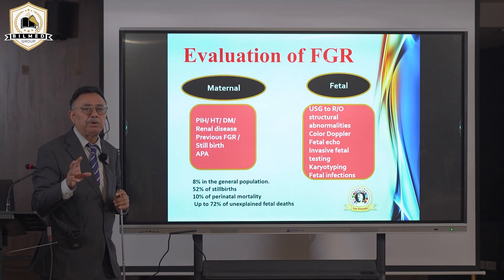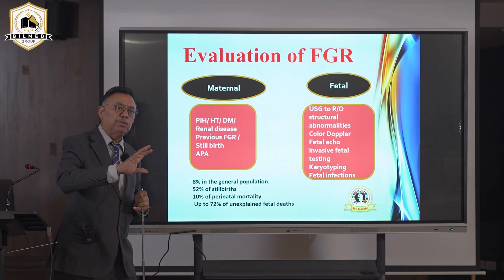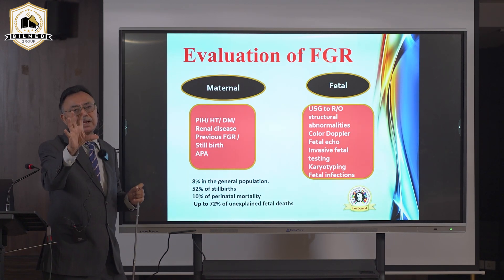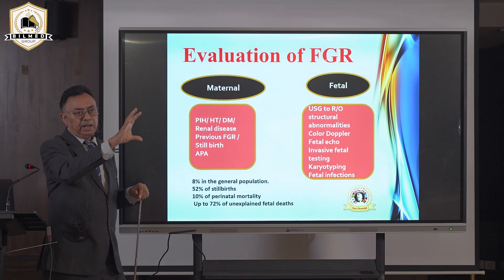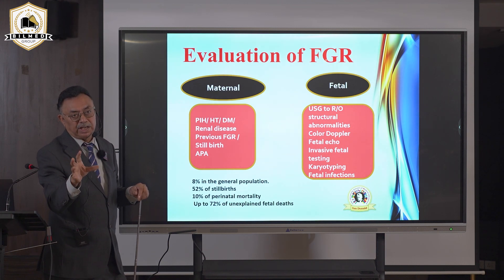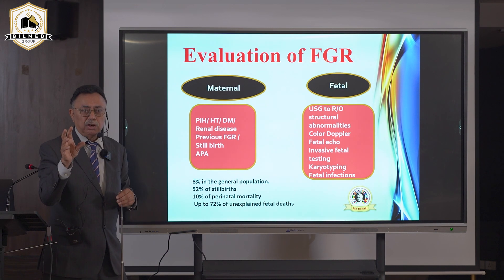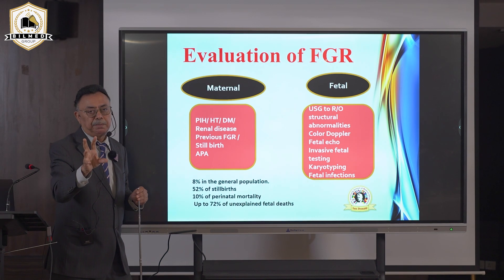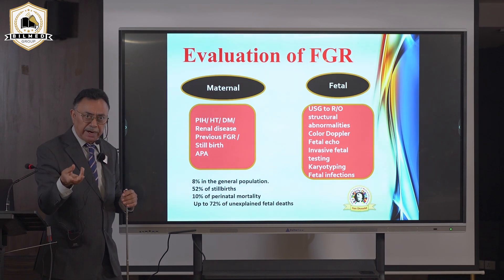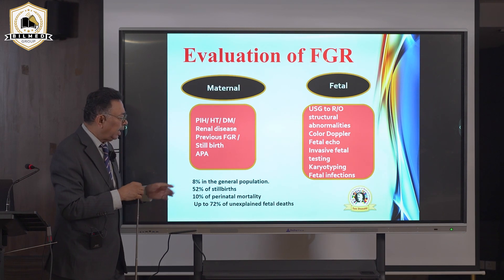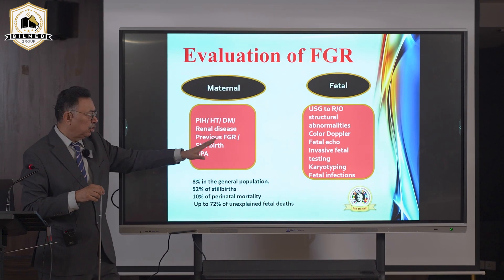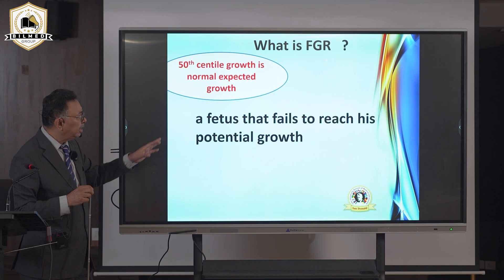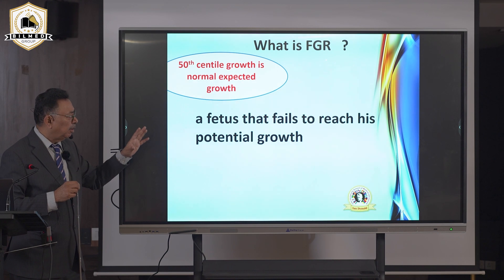On the fetal side, growth retardation may be due to fetal anomalies. First, perform a complete fetal anomaly scan at 20 weeks. Then do color Doppler to confirm the umbilical and uterine arteries are dilated while cerebral and other arteries are normal. Fetal echo is needed as cardiac defects are associated with growth retardation. Invasive testing — amniocentesis, NIPT, karyotyping, and fetal infection assessment — may also be required.